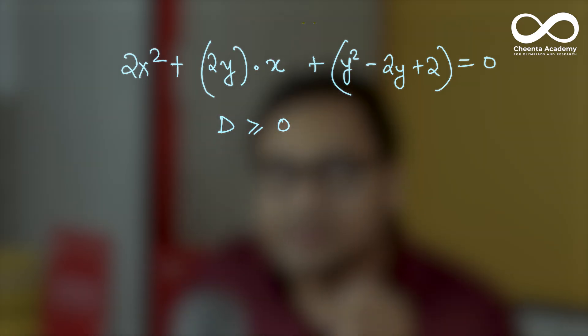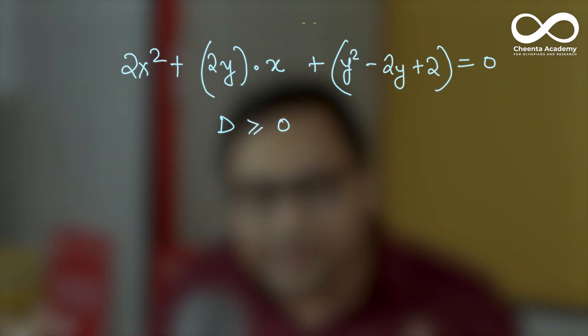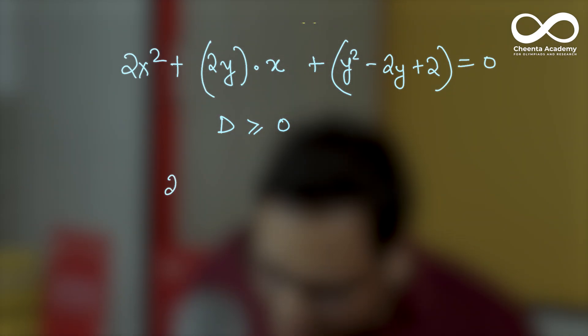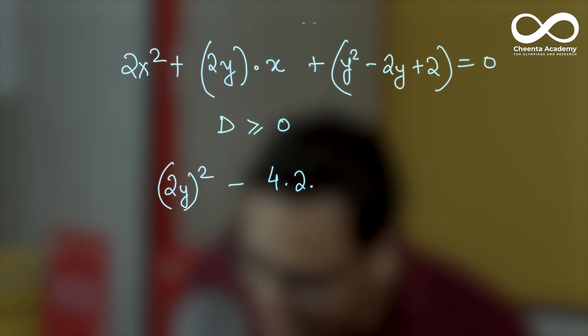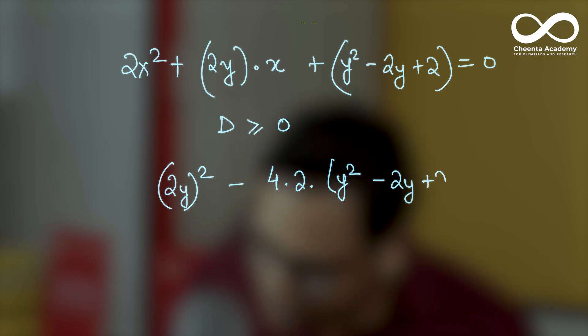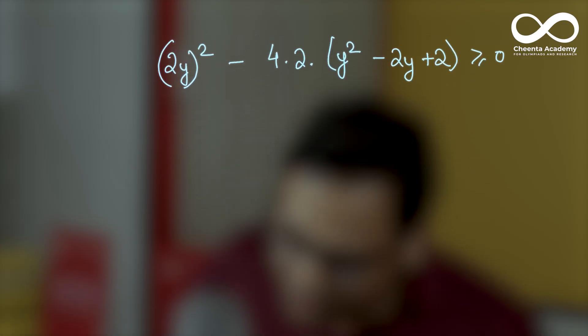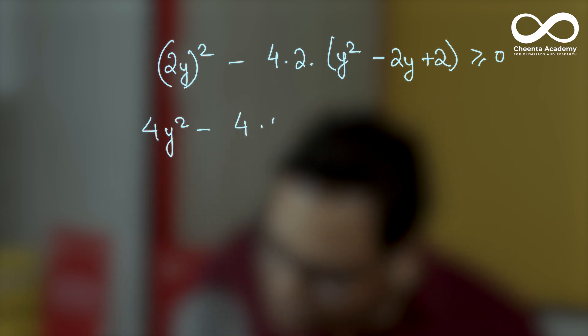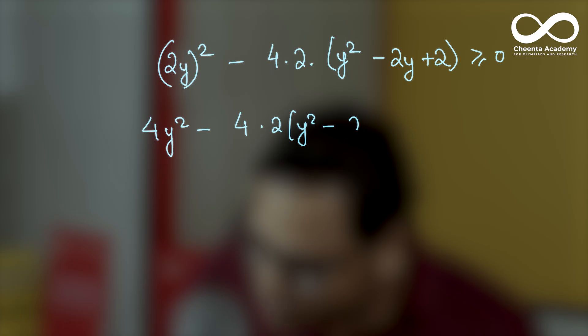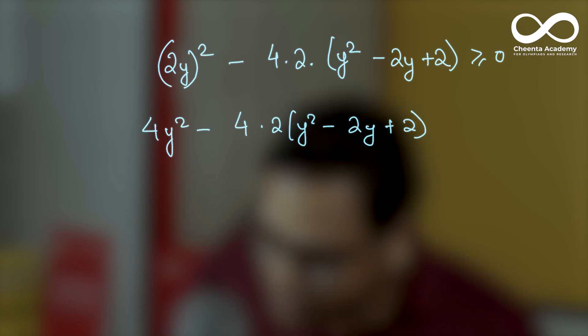What is the discriminant? The discriminant is b squared minus 4ac. b squared is 2y squared, y whole squared, minus 4 times 2 times y squared minus 2y plus 2. This must be greater than or equal to 0. Or we have 4y squared minus 4 into 2 times y squared minus 2y plus 2 greater than or equal to 0. I can cancel off the 4.